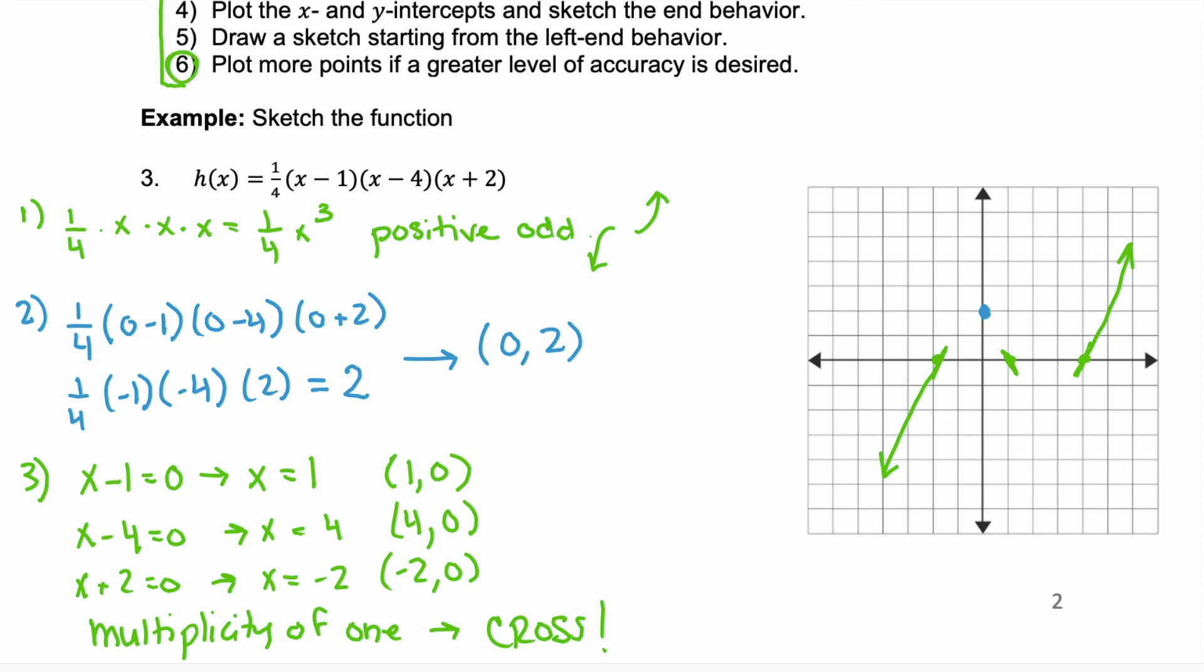Notice that step six, you can plot even more points if you want greater accuracy to your graph. Here, we don't really need that, we just want a general shape. So, there's the general shape of our h(x) function.